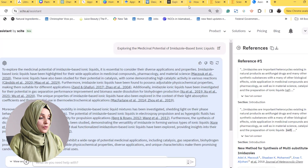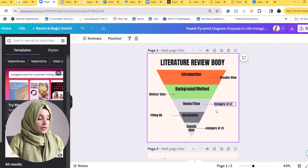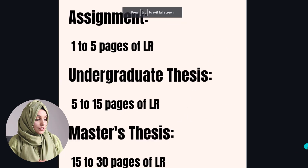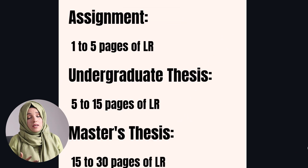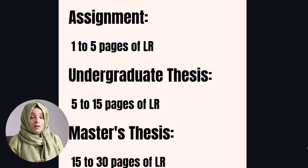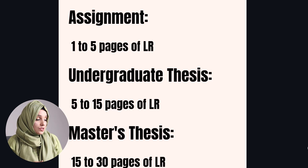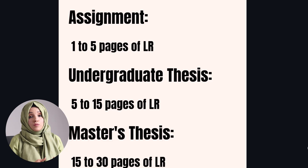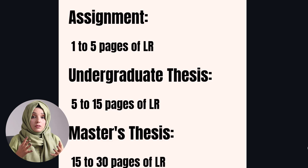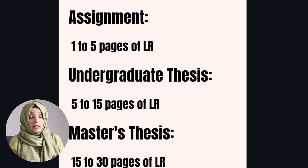Now let's cover the last point of the video: how many pages are required in each kind of research document. For any kind of assignment, mostly 1 to 5 pages of literature review is required. For an undergraduate thesis, this number varies from 5 to 15 pages. For a master's thesis, this number varies from 15 to 30 or even 50 pages. It all depends on the type of topic and the requirements or limitations of your department.